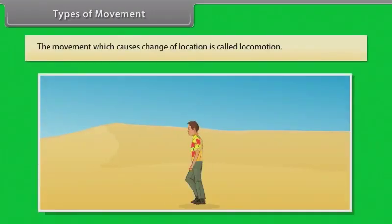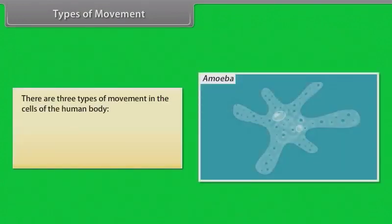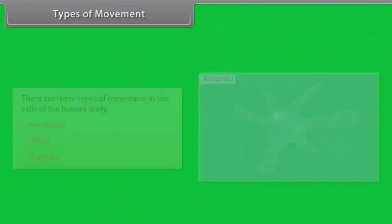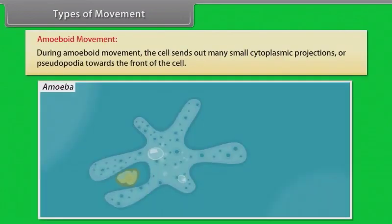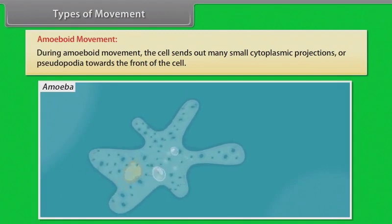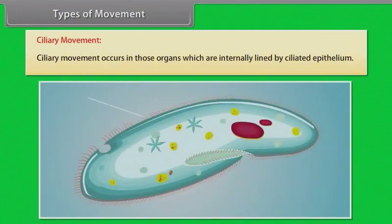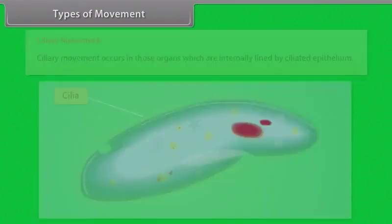Types of movement. The movement which causes change of location is called locomotion. There are three types of movements in the cells of the human body: amoeboid, ciliary, and muscular. During amoeboid movement, the cell sends out many small cytoplasmic projections, or pseudopodia, towards the front of the cell. Ciliary movement occurs in those organs which are internally lined by ciliated epithelium.